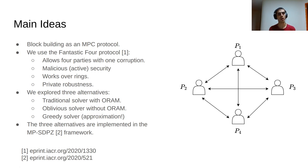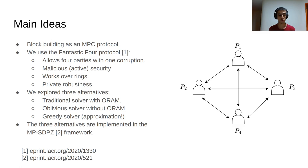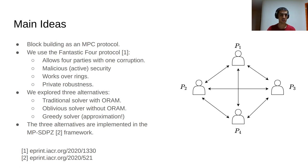The Fantastic Four protocol allows four parties and one corruption. This protocol is secured against malicious adversaries, and it works over rings, meaning the underlying algebraic structure is a ring of the form Z/2^k. This protocol also offers an additional characteristic called private robustness, which means that the protocol will end successfully and this success will not affect the privacy of each node participating in the protocol.